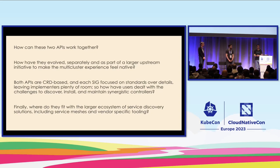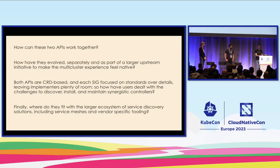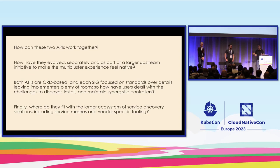Coming from the GKE perspective, we've loved the features that this unlocks. Earlier this KubeCon I had a talk with Li Wen from AWS about how cloud providers — them on EKS and us on GKE — are using these two APIs together to enable some really powerful routing across clusters. Gateway API enables lots of advanced routing functionality that hasn't been in Kubernetes yet, and multi-cluster services allows us to bridge that multi-cluster service gap. Combined, they're a really cool set of APIs to work with.